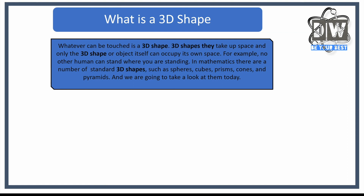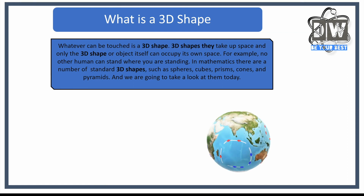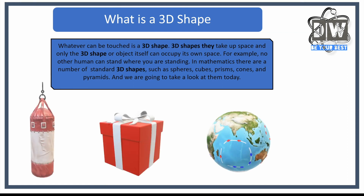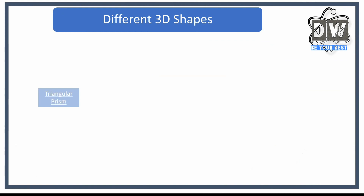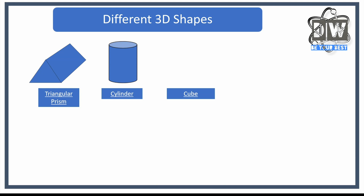We're going to take a look at those today. Here are some examples — we call them things like the earth, a present, a punching bag, or a human in everyday life, but in mathematics we call them other things. Here's an example: a triangular prism — it's got a triangle shape on the front and a triangular shape on the back. A cylinder is like a water bottle.